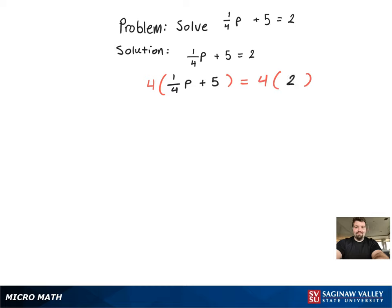Now I have to distribute the 4 through, which gets rid of the 1 fourth, and then I'm left with p plus 20 equals 8. Now, to solve for p, all I have to do is just subtract the 20, and then you get p equals negative 12.